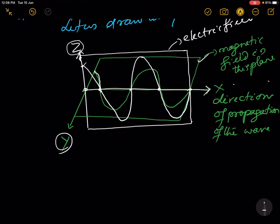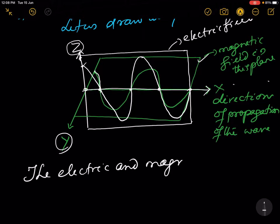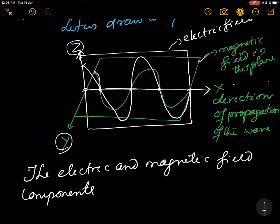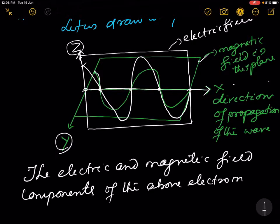The electric and magnetic field components of the electromagnetic wave are perpendicular to each other and also perpendicular to the direction of propagation.